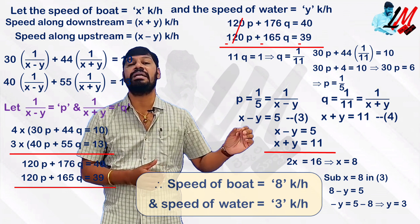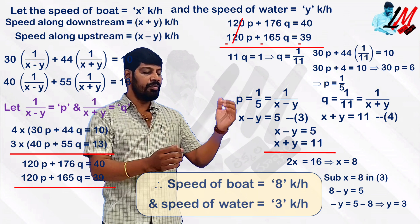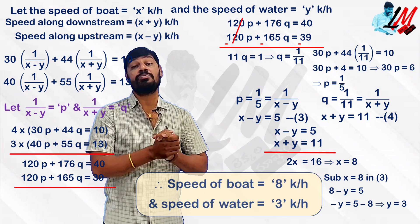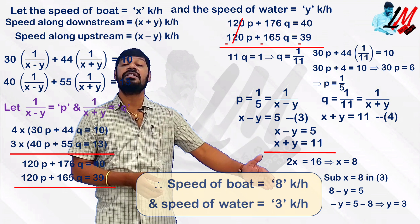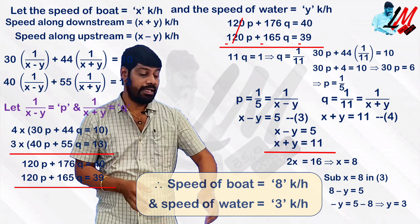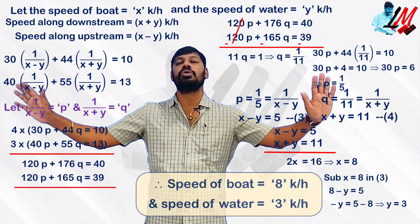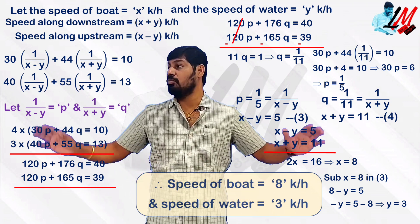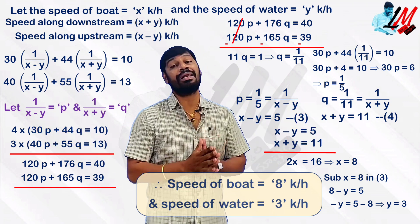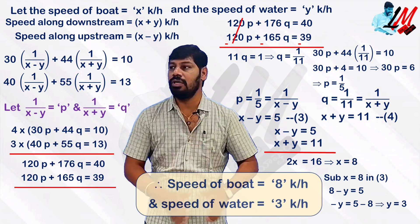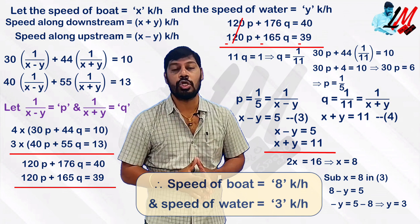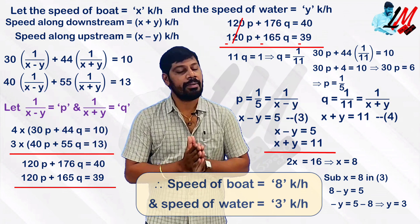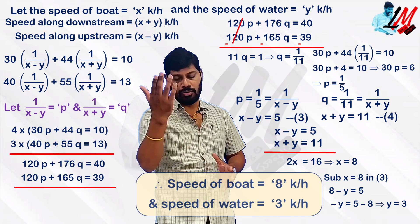The boat speed is 8 km/h and stream speed is 3 km/h. So speed along upstream is 8 minus 3 equals 5 km per hour, and speed along downstream is 8 plus 3 equals 11 km per hour. This is the solution of this word problem. I hope you can solve this problem, my children. Take care, bye-bye. Your local master, Haragopal.